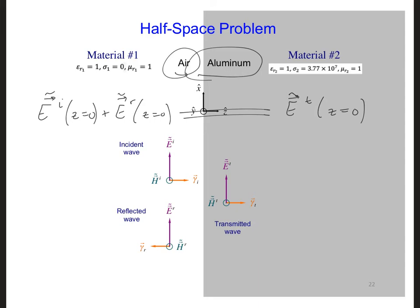And we can write the same thing for the magnetic field. And we can write the magnetic field in terms of the electric field as E vector phasor I over eta 1 plus E vector phasor R over eta 1. And on the other side, that's going to be equal to E vector phasor transmitted over eta 2. And, of course, all of these are at Z equals 0.